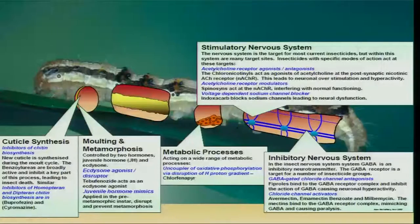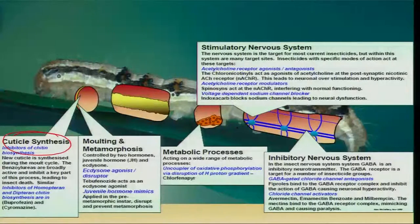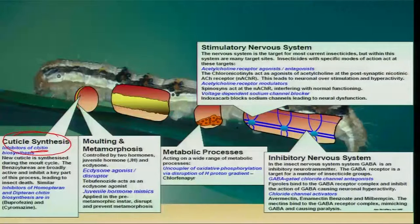After 1992, as mentioned in the last class, a lot of new classes of insecticides were synthesized. This diagram clearly indicates the five modes of action of the new class of pesticides. The first and foremost is insecticides acting on cuticle synthesis — they inhibit cuticle synthesis. Chitin is an important compound required for the formation of cuticle at the time of molting. These products inhibit chitin synthesis, thereby resulting in the death of the insect.